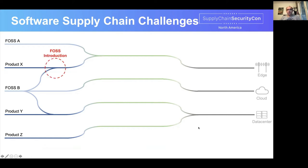The first challenge we are facing is FOSS introduction. Vendors developing a product need to bring in certain dependencies from upstream communities if they are using open source components. The first challenge is how to introduce those FOSS components into a product development organization. Free and open source software has different licensing types, and components could have different security and vulnerability issues — all of which must be vetted before the software can be introduced. The challenge is how to introduce new FOSS or newer versions of existing FOSS components in a fast and satisfying manner.